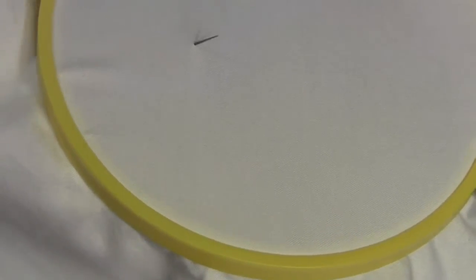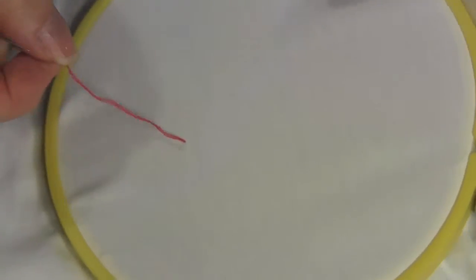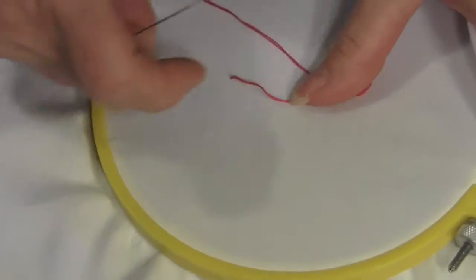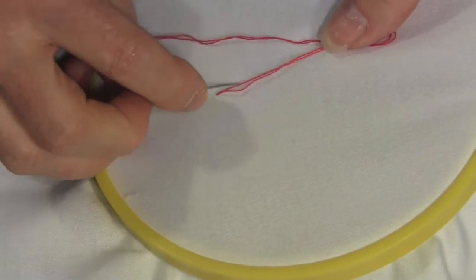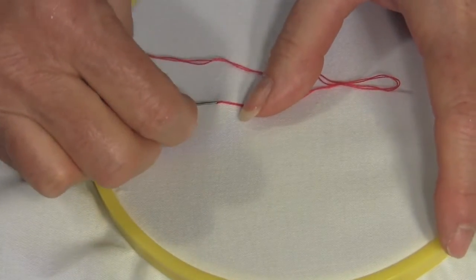To chain stitch, bring the thread up from the back. Form a U-shape with the floss and hold the shape in place with your thumb. Insert the needle where it last emerged and bring the point of the needle out a stitch length away.